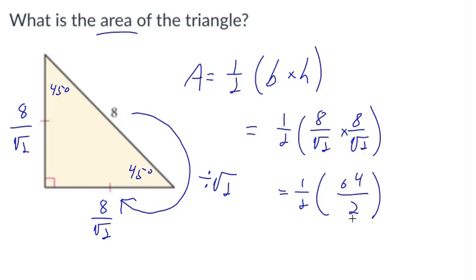Let's treat this fraction like a division problem. 64 divided by 2 equals 32. So we have one-half times 32, which equals 16. So the area of this triangle is 16 square units.